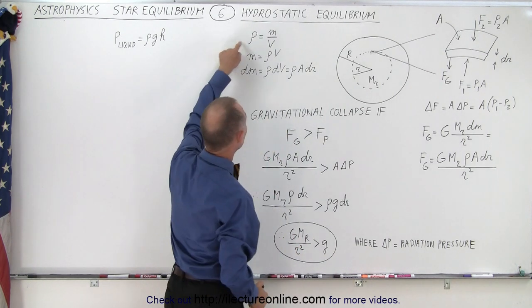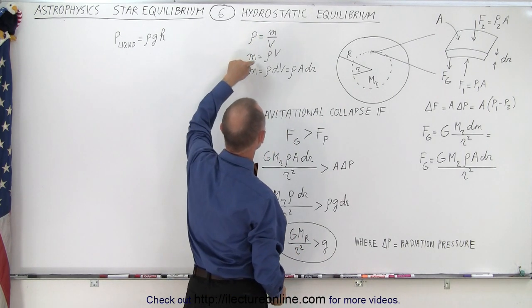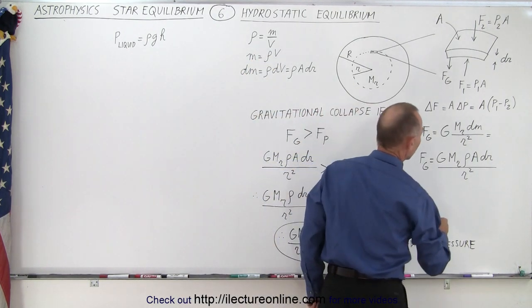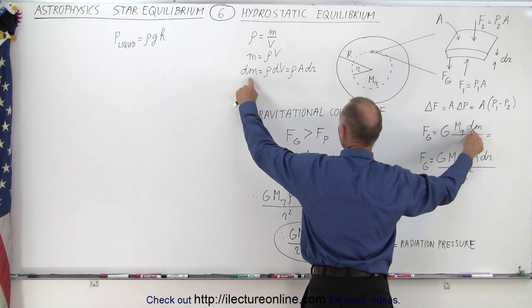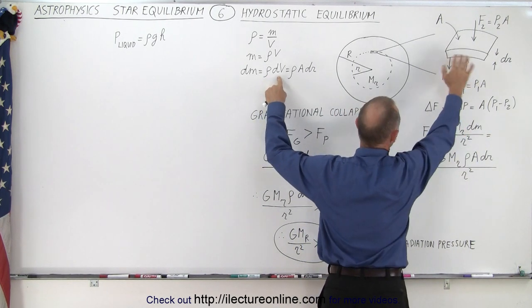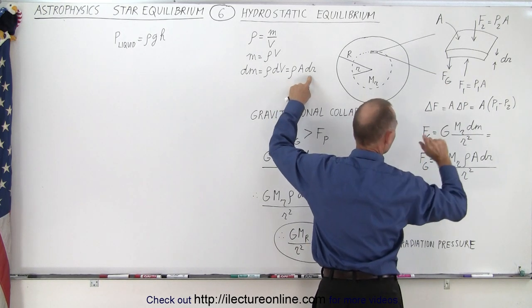Now, remember that density is mass divided by volume, or mass is equal to density times volume. So we can actually replace the dm, because if we then calculate dm, it's equal to density times dv and dv, the volume of that is going to be the area times the thickness dr.